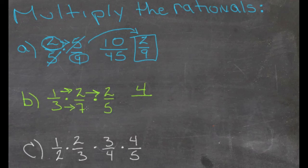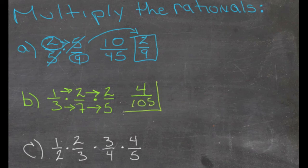3 times 7 is 21, and 21 times 5 is 105. So we get 4/105, and that does not reduce.